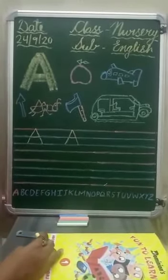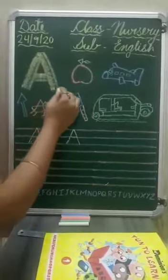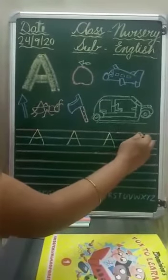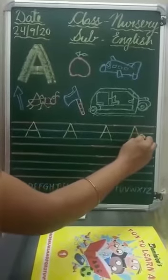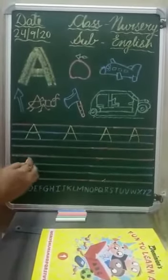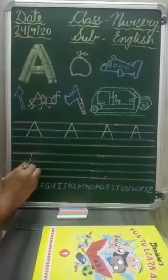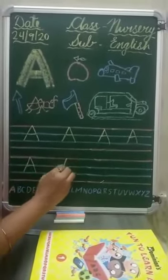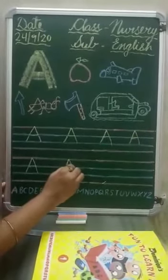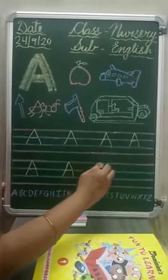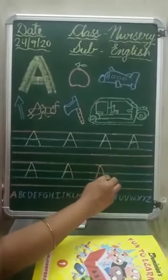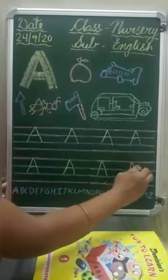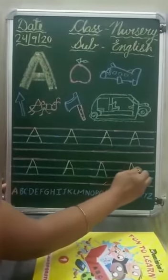So kids, let's start our book work. A for apple — apple. A for aeroplane — aeroplane. A for arrow — arrow. A for ant — ant. A for x — x. A for auto rickshaw — auto rickshaw. A for apple — A, A, apple. A for aeroplane — A, A, aeroplane. A for arrow — A, A, arrow. A for ant — A, A, ant.